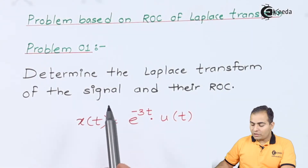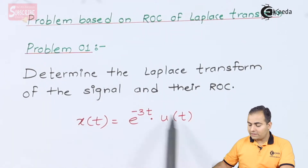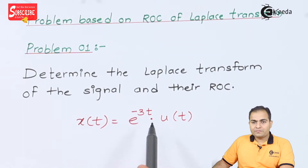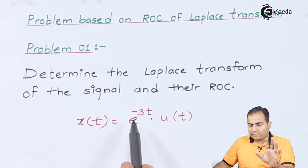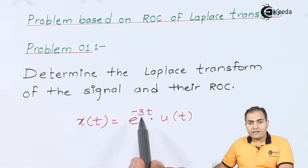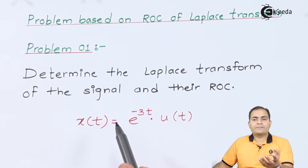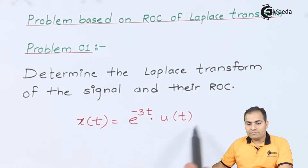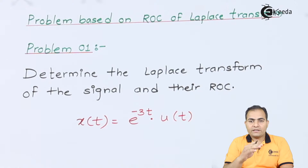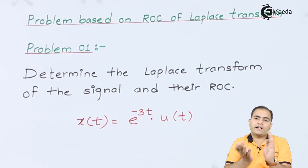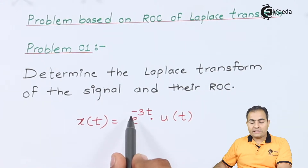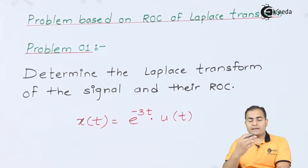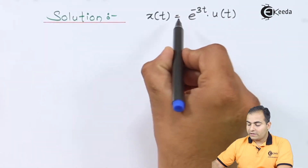Problem number one: determine the Laplace transform of the signal and its ROC. The signal is x(t) = e^(-3t) · u(t). Now if we have only e^(-3t) without u(t), it will produce an infinite result. We always multiply the function with some input so that it can be completely transformed to the right-hand side or left-hand side. So here e^(-3t) is multiplied with u(t).